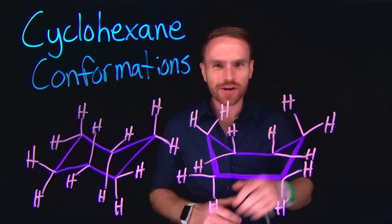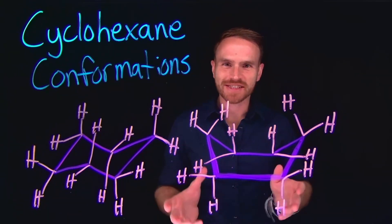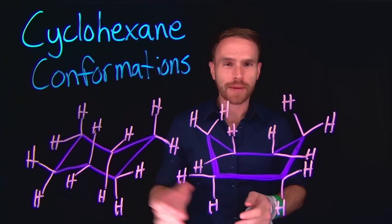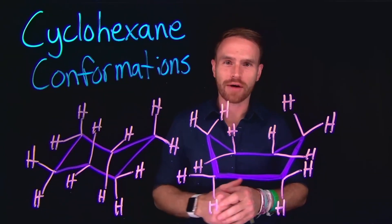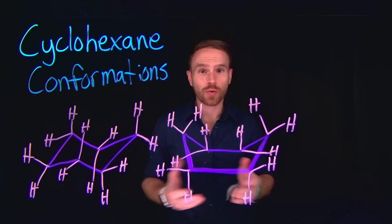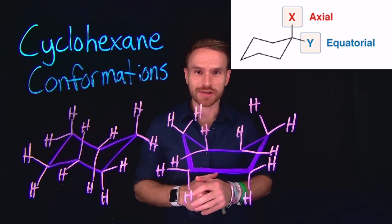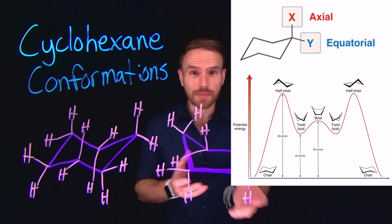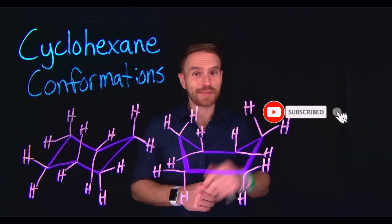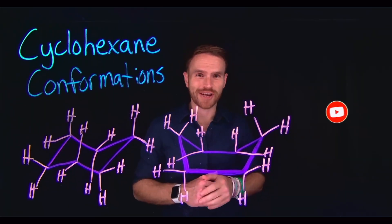I am so glad you're here. Today, we're going to be talking about the different conformations that cyclohexane can produce — for example, a chair conformation or a boat conformation. In addition to learning how to draw these conformations, we're going to learn about axial and equatorial positions, comparing the stability of different conformations, and make sure you stick around to the end because I have some practice problems that should help for your next exam.